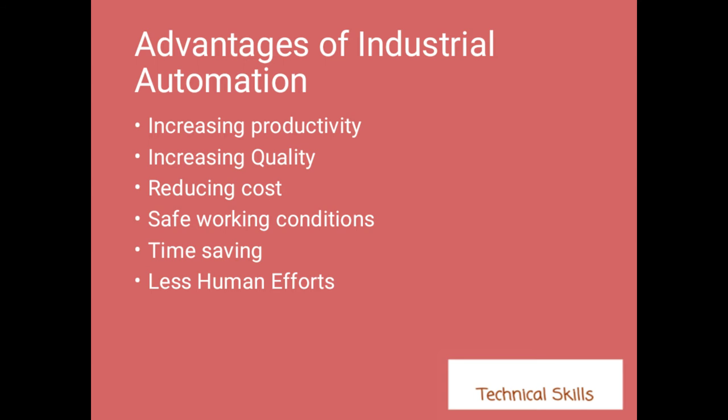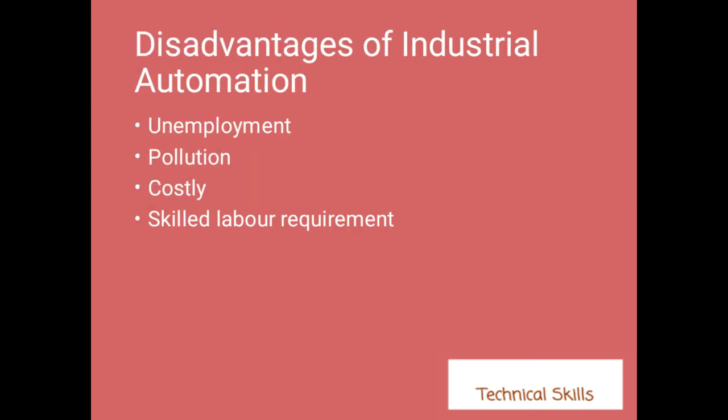Now let's move to the disadvantages of industrial automation. The first disadvantage is unemployment. If we are using machines to do the work, our laborers will be free. So we are creating unemployment with industrial automation.